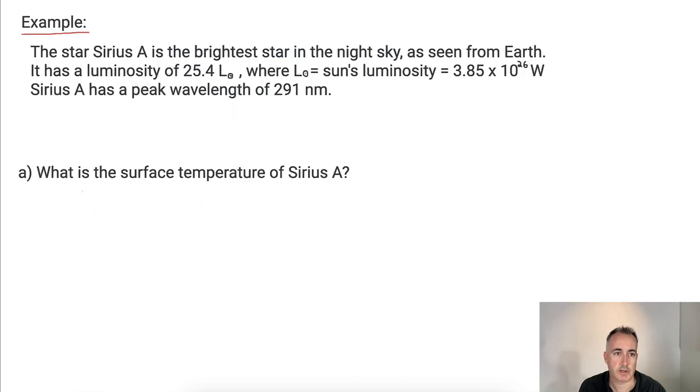So let's do an example here. We have the star Sirius A, and it's the brightest star in the sky, at least as seen from Earth. So it has a luminosity of 25.4 times the sun's luminosity, which is 3.85 times 10 to the 26 watts. And we know it has a peak wavelength of 291 nanometers. Watch out for that. And the question is, first of all, what's the surface temperature?